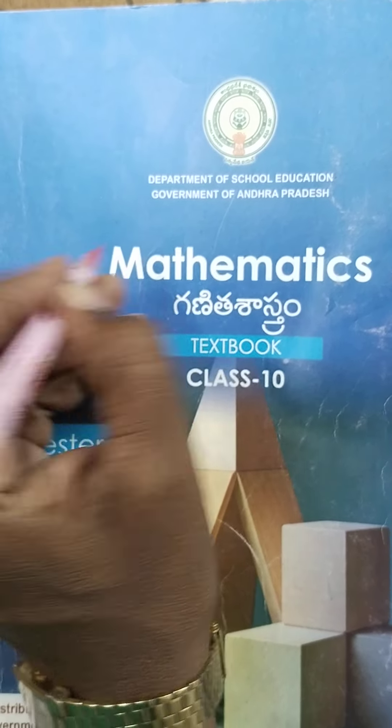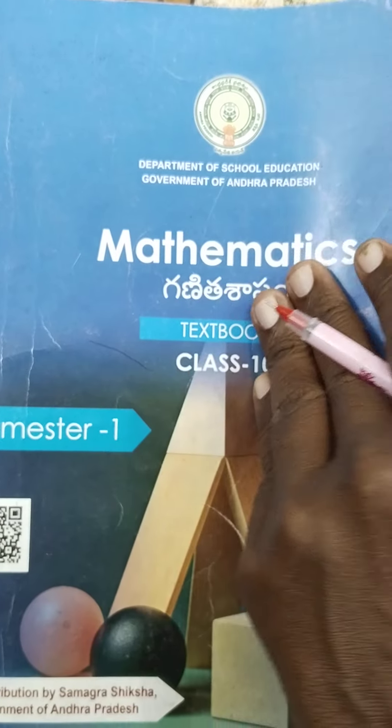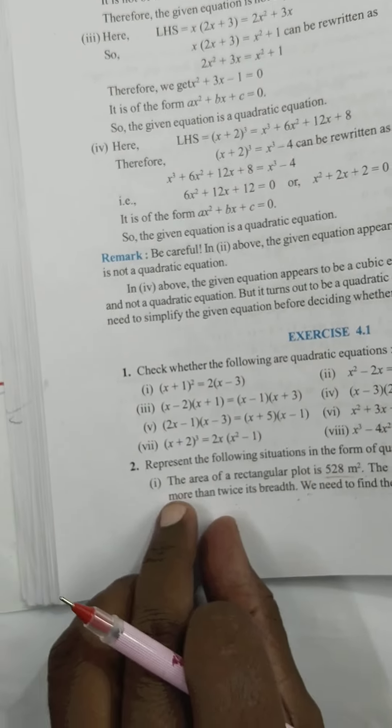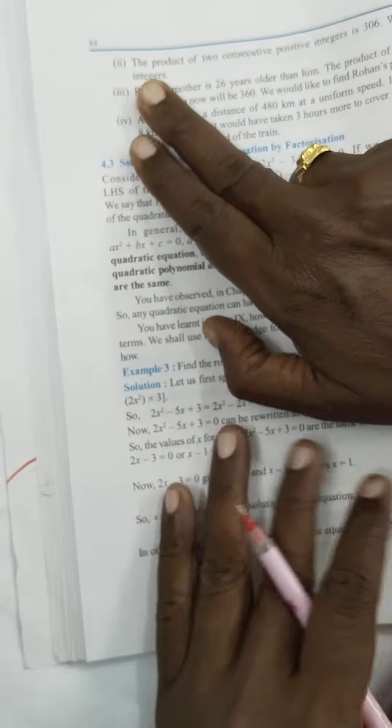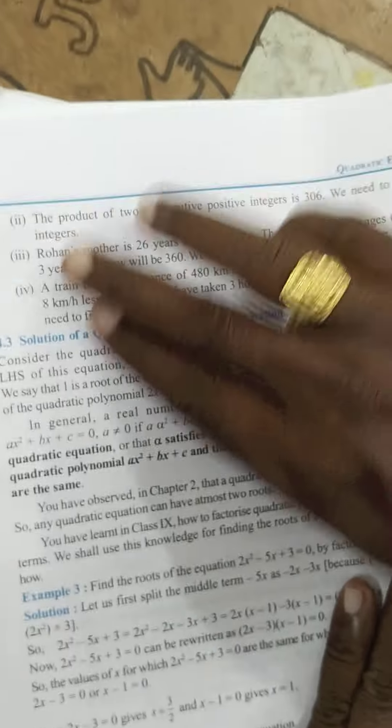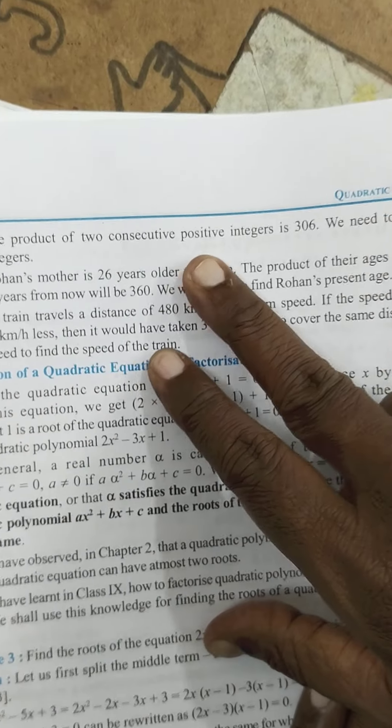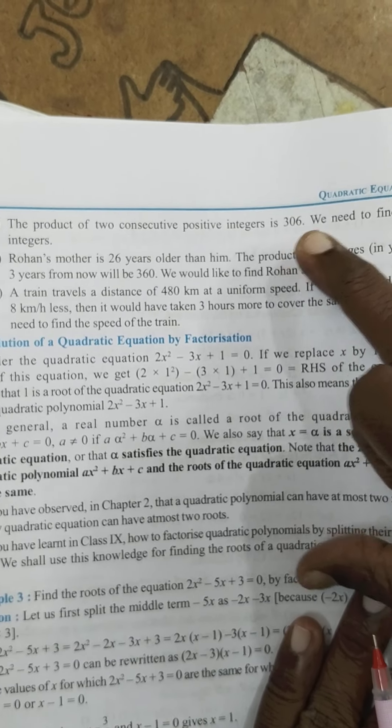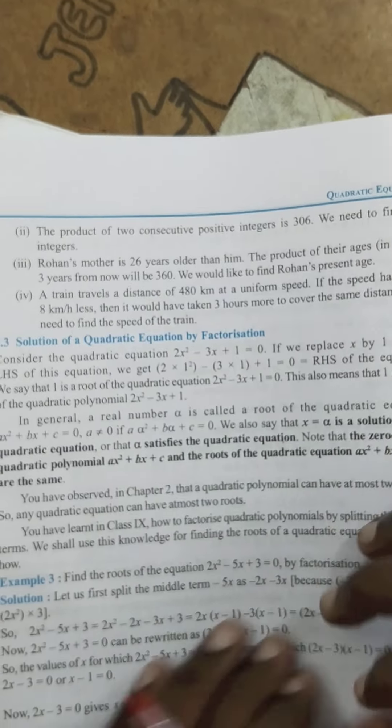Hi everyone, welcome to 10th class students for math class. Today I am going to explain quadratic equations Exercise 4.1, second problem. The product of two consecutive positive integers is 306. We need to find the integers.